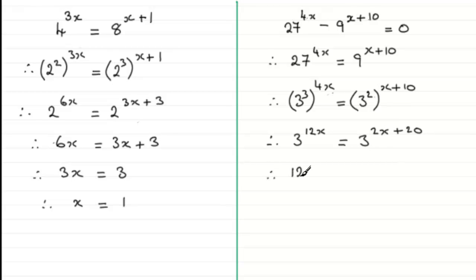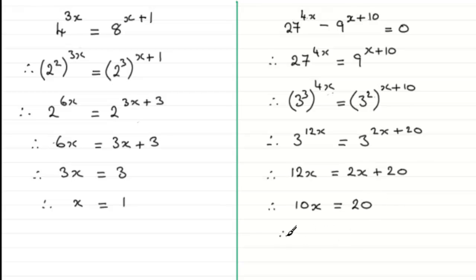Therefore we've got 12x must equal 2x plus 20. If we subtract 2x from both sides we end up with 10x equaling 20, and dividing both sides by 10 gives us x equals 20 divided by 10, which is 2. So I hope you were able to get those right, and if you did trip up, hopefully you've been able to see where you went wrong.